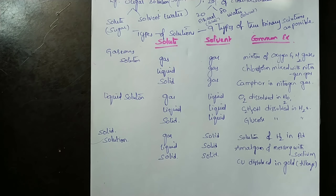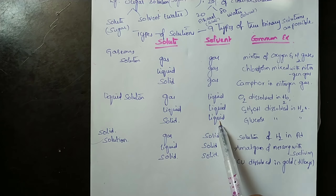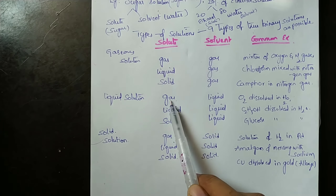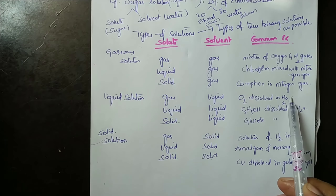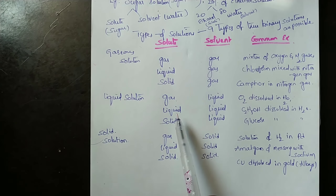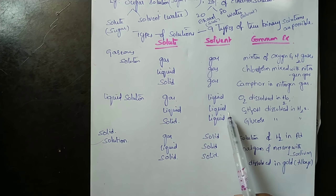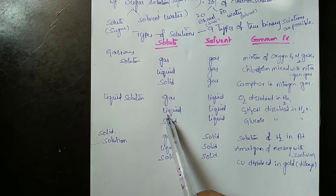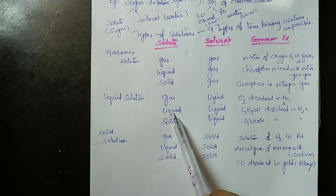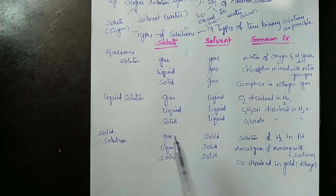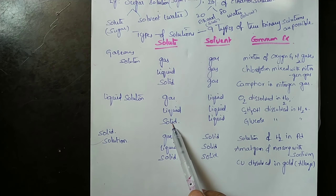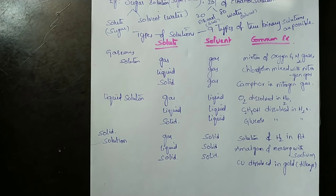In a liquid solution, when the solvent is liquid and solute is gas, an example is oxygen gas dissolved in water. When both solute and solvent are liquid, an example is ethanol dissolved in water. When the solute is solid and solvent is liquid, an example is glucose dissolved in water.